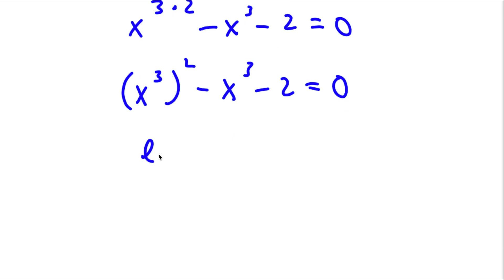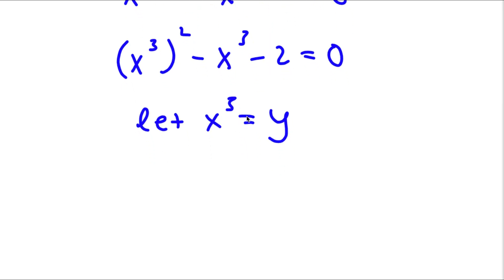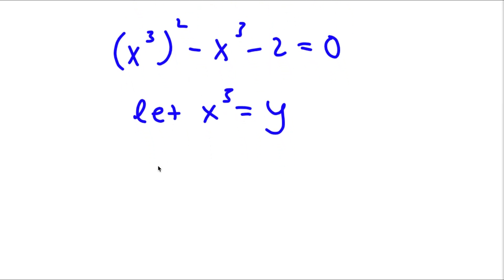And now I'm going to let x to the power of 3 equal y. So now if I substitute in y for x to the power of 3, I get y squared minus y minus 2 is equal to 0.